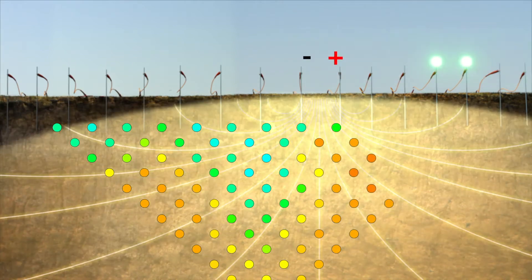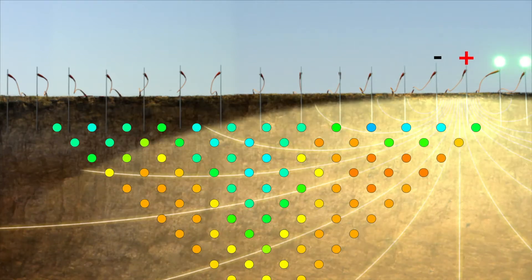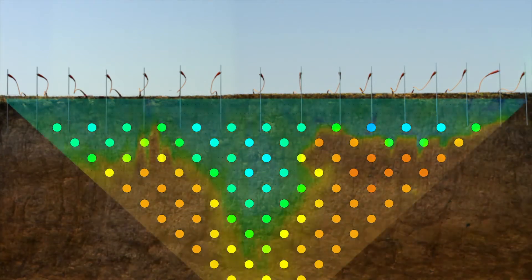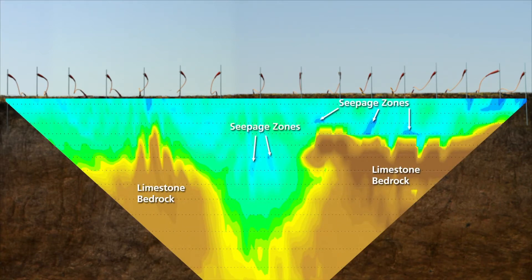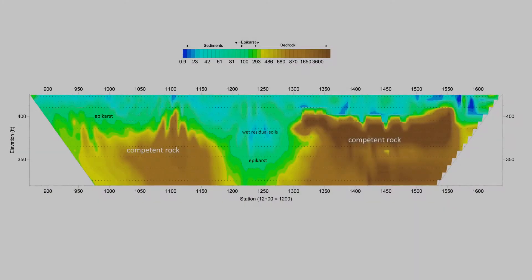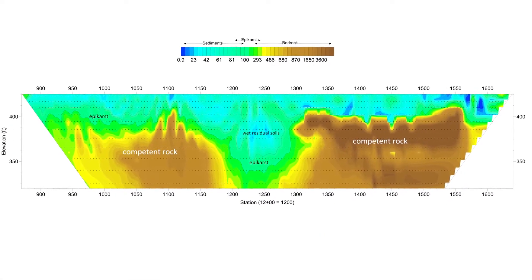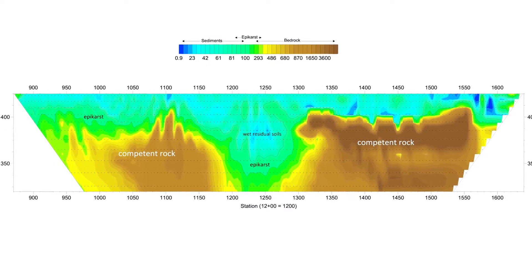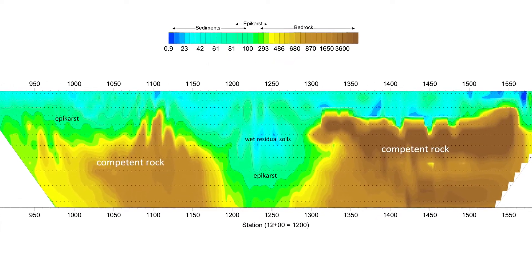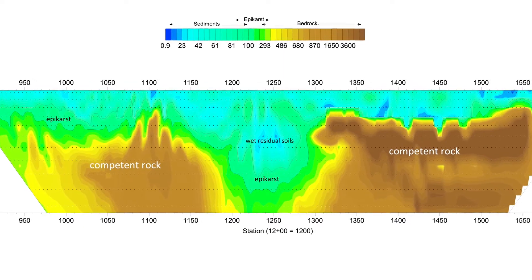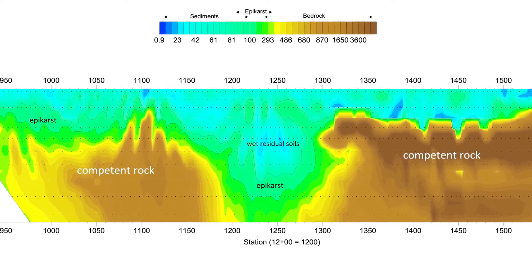Wider electrode spacing allows for investigation of deeper soil layers. Processed data from a long array of electrodes can be used to develop a resistivity profile of the subsurface. Electrical resistivity techniques distinguish materials having dissimilar conductivity, making them useful in identifying clay, voids, and water-bearing layers within more granular soils or bedrock.